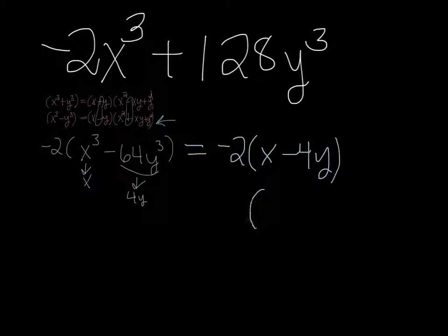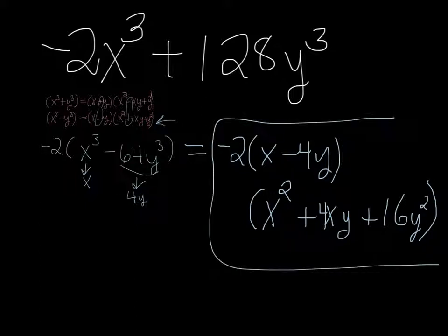And then I'm going to put the second line, or the second part down here, x squared plus x times 4y, so 4xy, and then it's the last one squared, so that's going to be plus 4y squared would be 16y squared. And that's it. This is your answer here in the box.